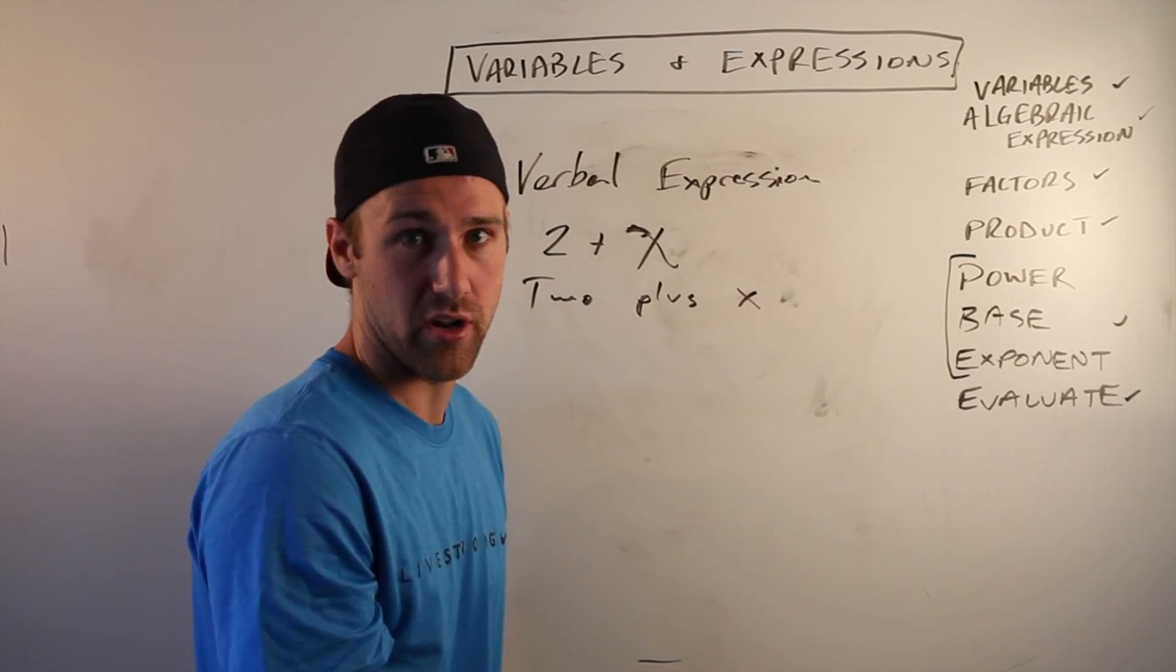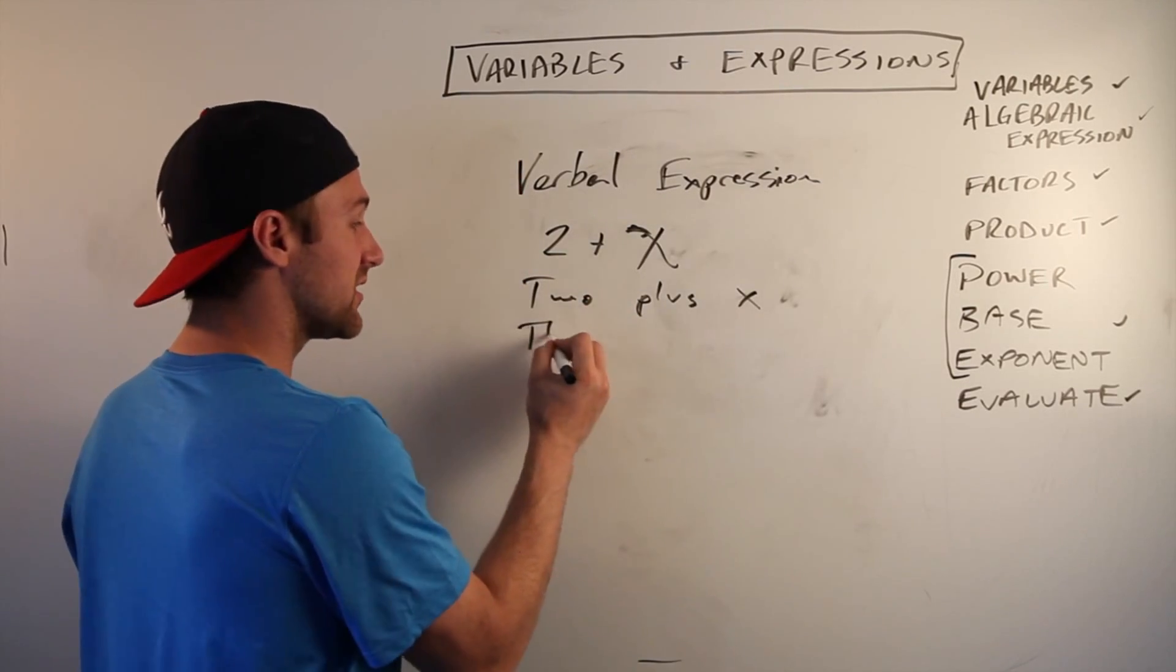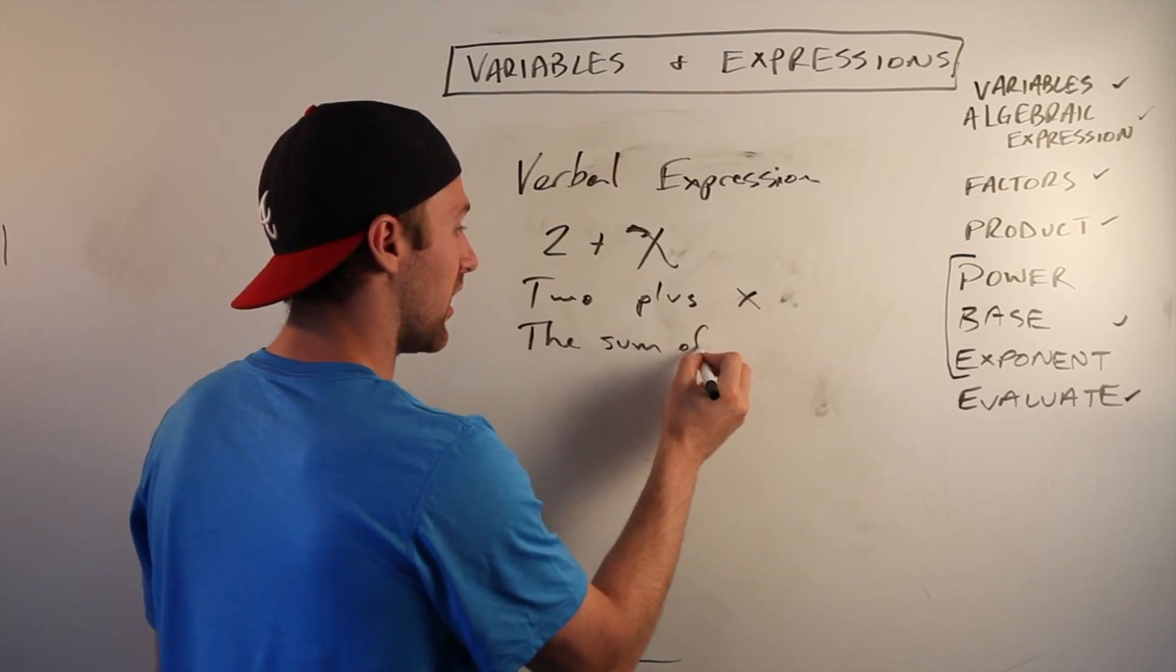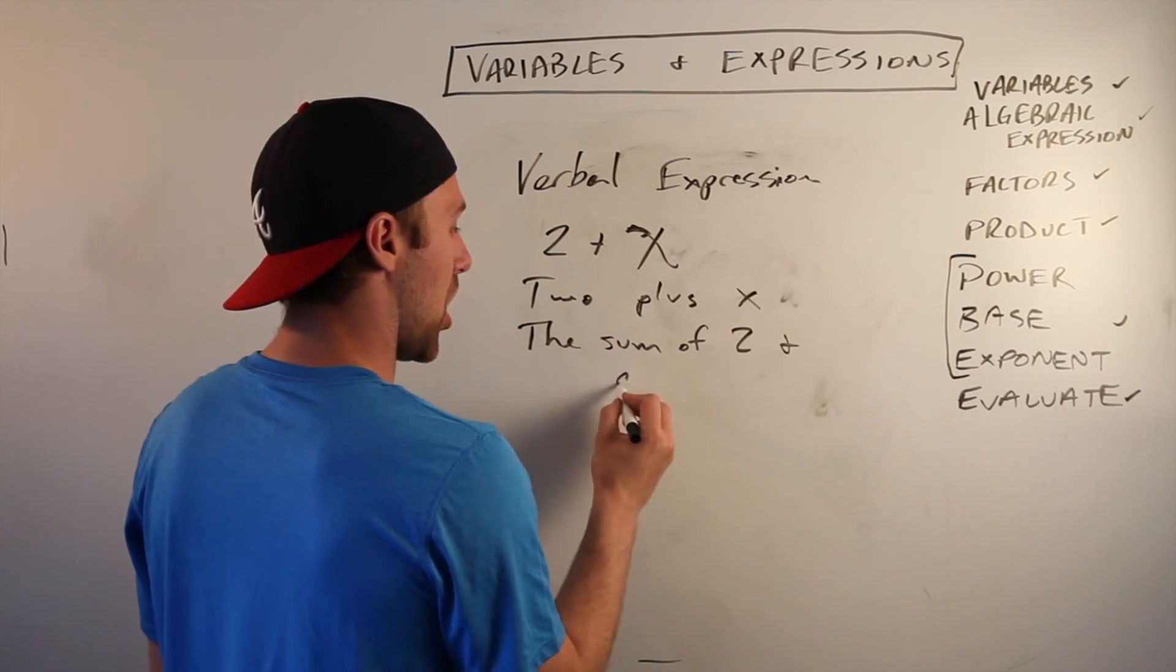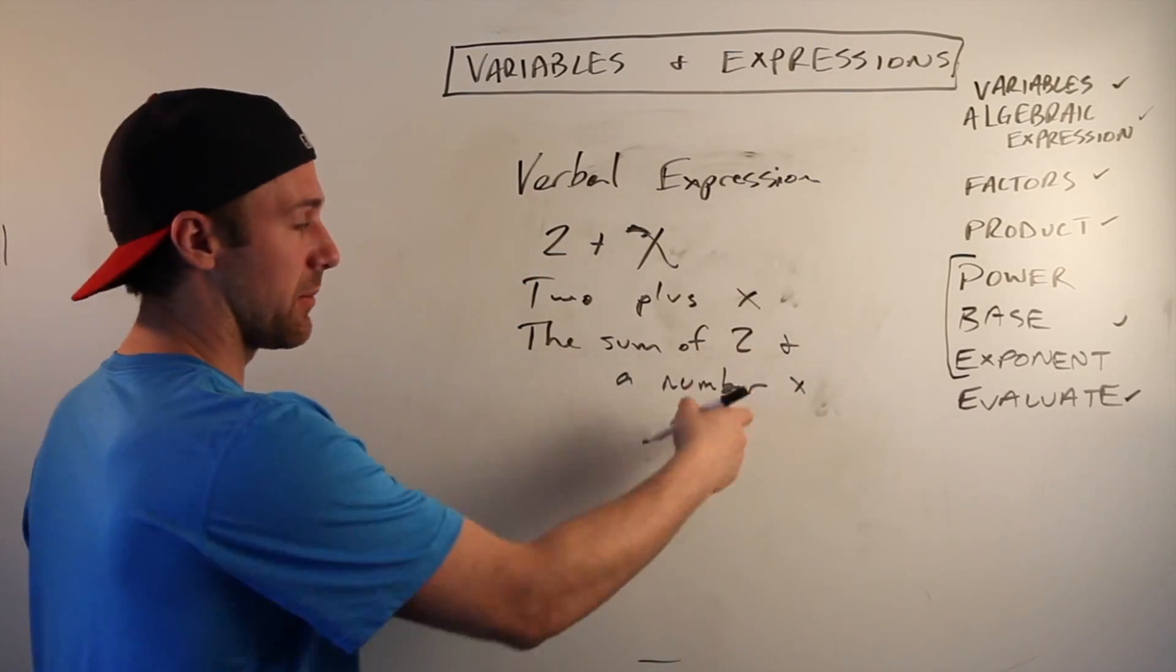It's not going to be two plus a bird. Two plus x or you could say the sum of two and a number x. Or you could just say the sum of two and x.